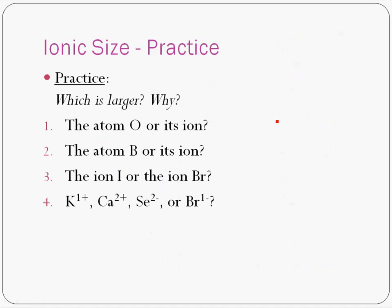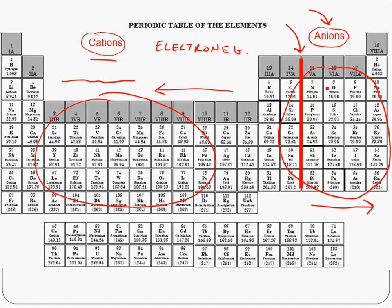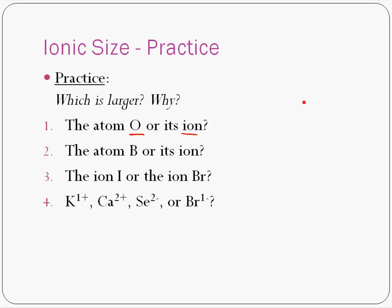So let's see if we can see some practice here. Now, if you're comparing an atom, say oxygen, with its ion, you've got to decide what type of ion it's going to make. Is it going to make a cation or an anion? And that will help you decide which is larger. Well, oxygen is on the right-hand side of that special line. That means it's going to make an anion. And we know that anions are bigger than their predecessor atoms. So the ion in this case would be bigger.